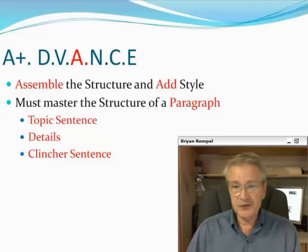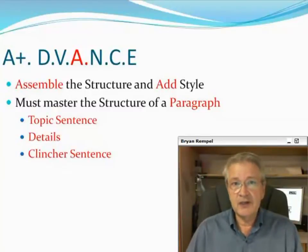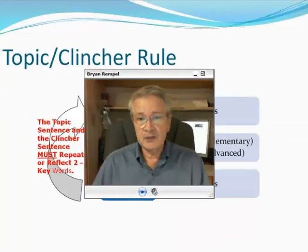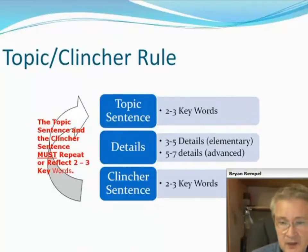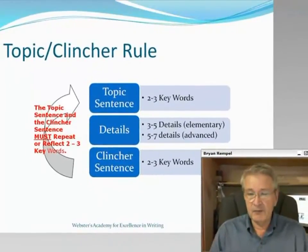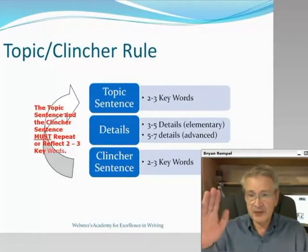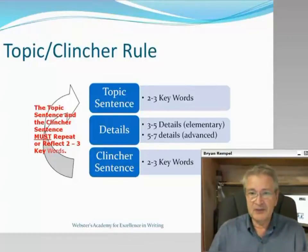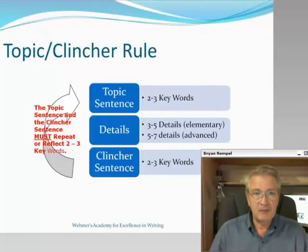There are several structures we want to look at, and then we're going to add in some stylistic techniques. The most foundational structure is one we've already talked about in the research part of this process — what we call the topic-clincher rule. For a basic paragraph, the topic sentence and the clincher sentence must repeat or reflect two to three key words. We actually have hand symbols that we teach students in our classes to help them remember that rule.